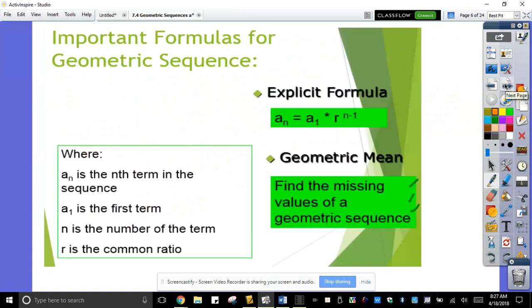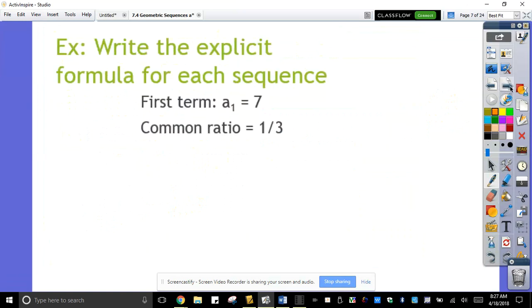So what is the formula to be used here? The explicit formula here is a sub n is equal to a sub 1 times the ratio raised to n minus 1. So write the explicit formula for each sequence here. Every time we are asked to write the explicit formula, basically you're being asked here to write the equation. You have to keep the first term and the common ratio.